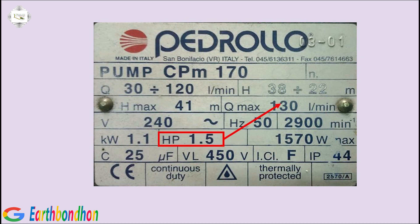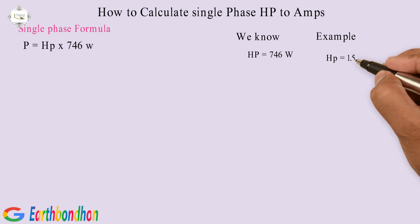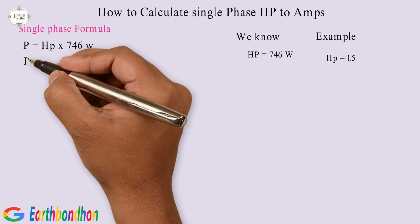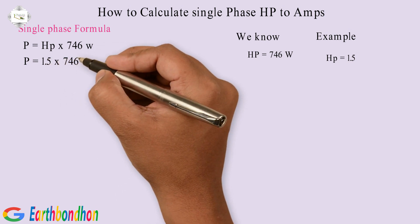Single phase motor example: HP equals 1.5. HP equals 1.5. P equals 1.5 multiplication 746 Watts.